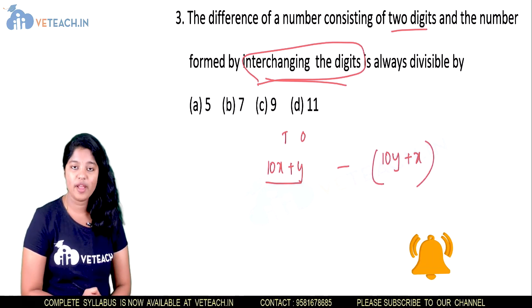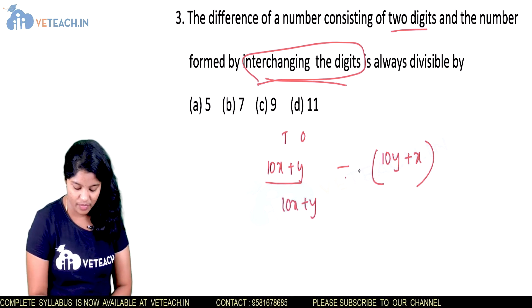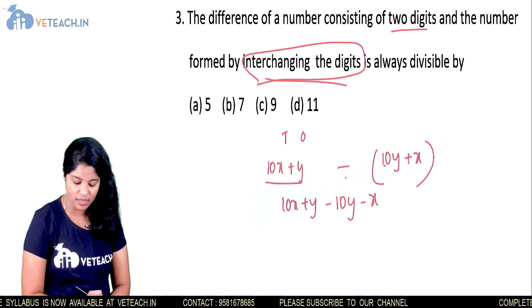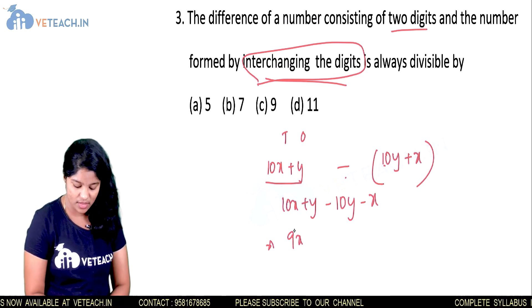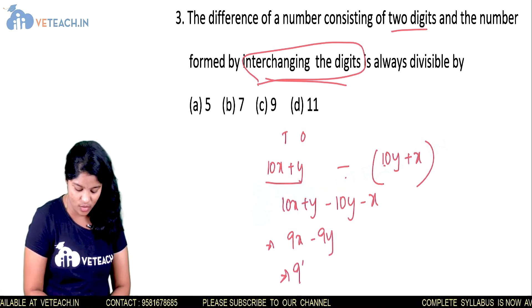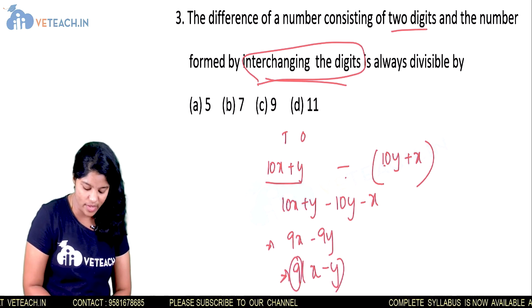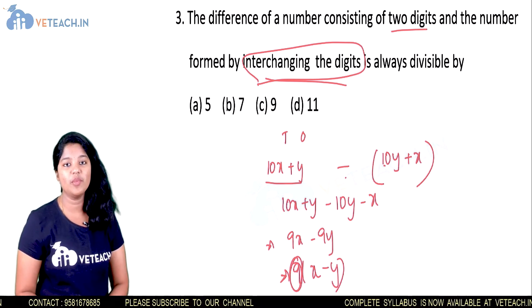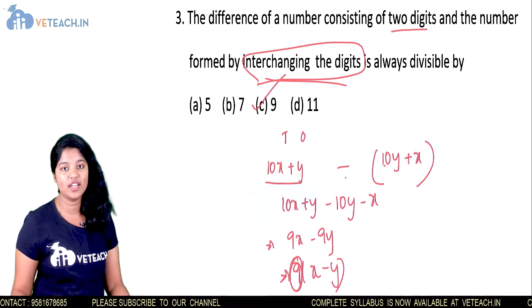Subtracting: (10x + y) minus (10y + x) gives 9x minus 9y. Taking 9 as common gives 9(x minus y), meaning this number is always a multiple of 9. So the difference is always divisible by 9 — option C is our correct answer.